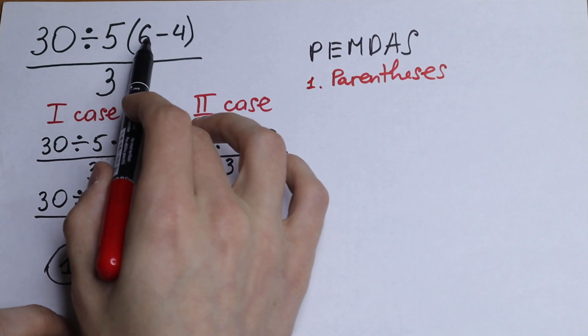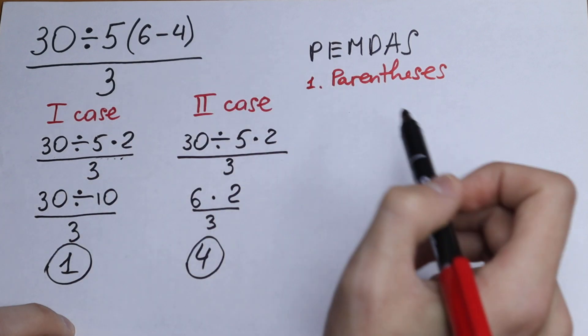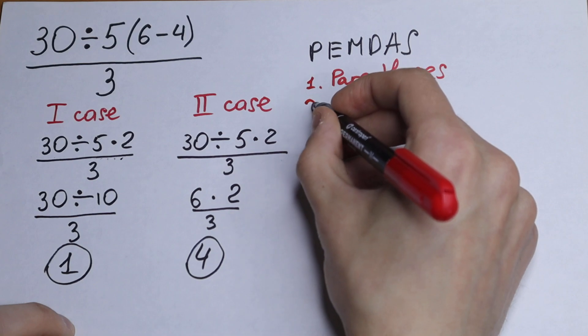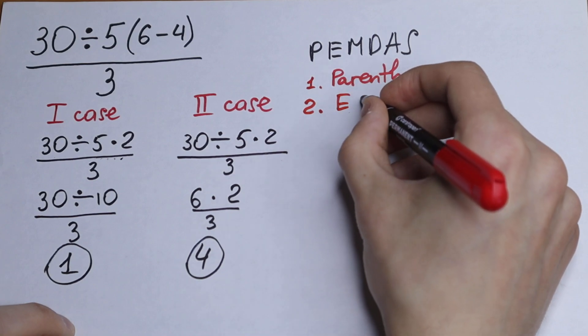First of all, we subtract 6 minus 4 in our parentheses, so this is good for us. Second, exponent. We don't have exponent.